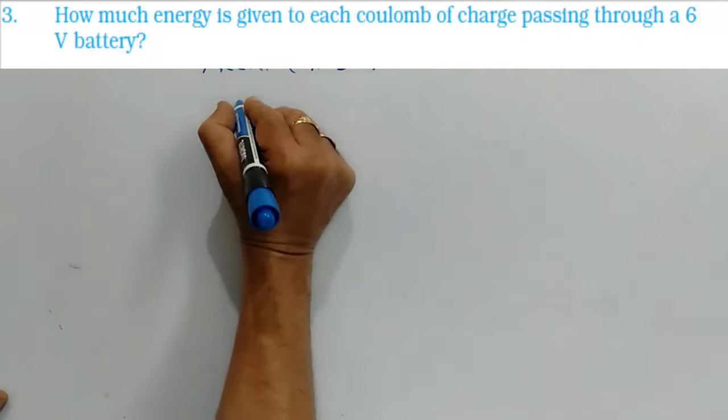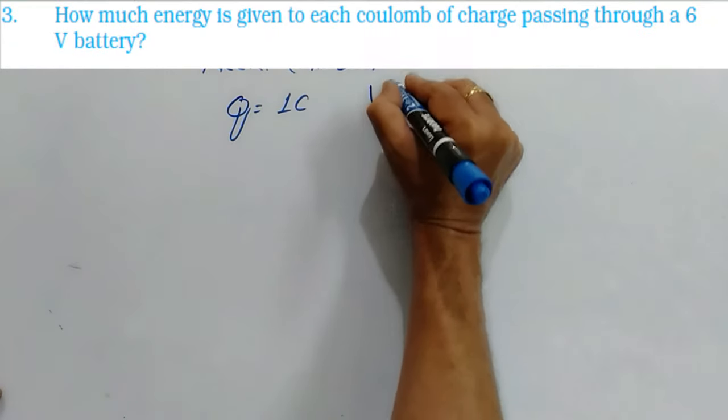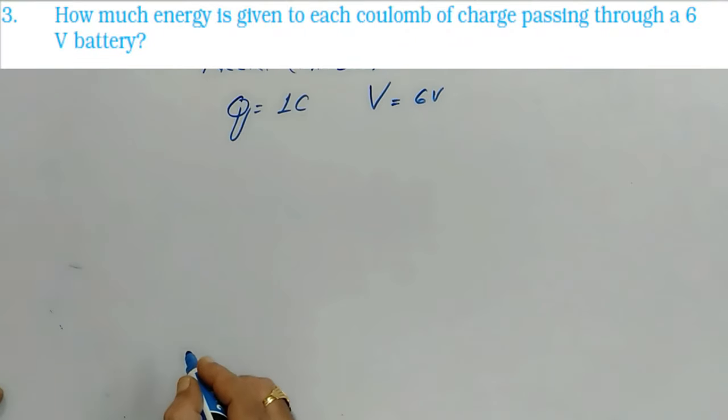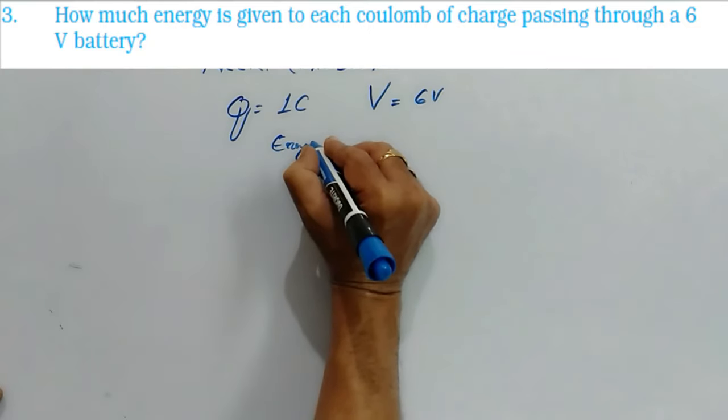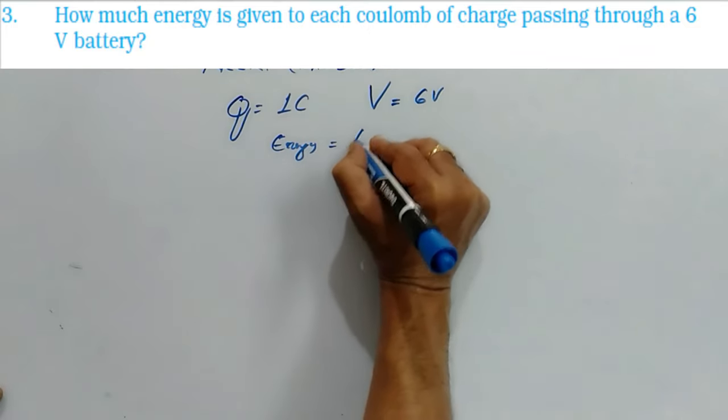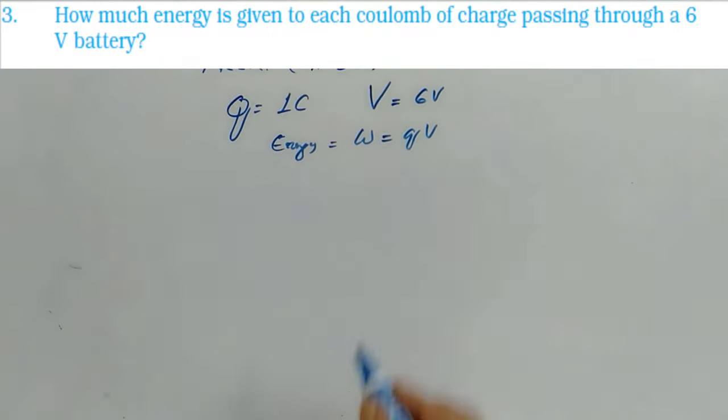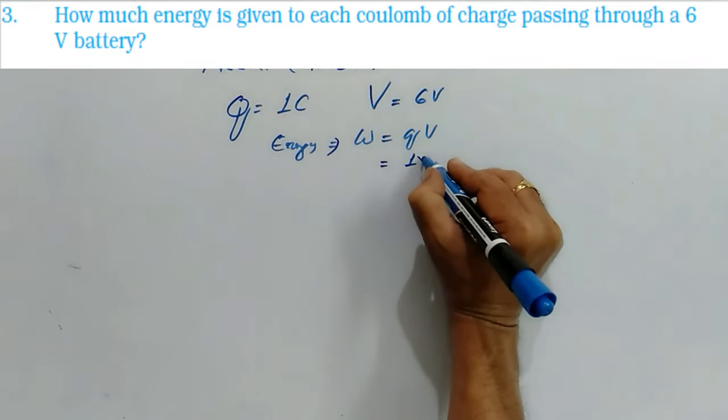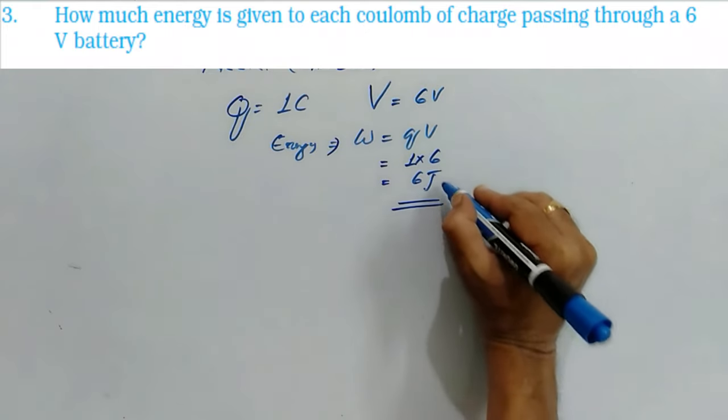In this question, the charge is given as 1 coulomb and the potential difference V is given as 6 V. Now energy is asked. Energy is nothing but the work done, which is the product of Q times V. That is 1 into 6, which is equal to 6 joules.